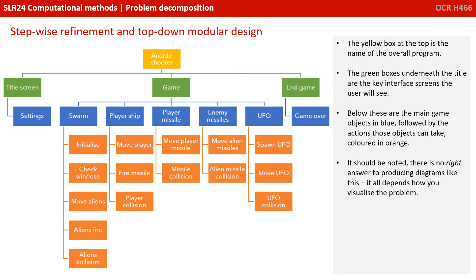The yellow box at the top is the name of the overall program. The green boxes underneath the title are the key interface screens the user will see. Below these are the main game objects in blue, followed by the actions those objects can take, coloured in orange. It should be noted at this point that there is no right answer to producing diagrams like this — it all depends how you visualise the problem.